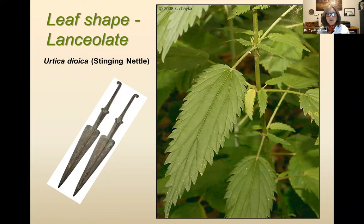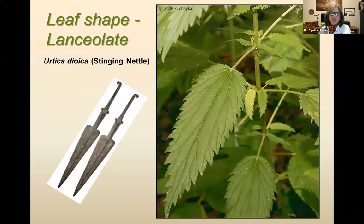I want to also show a couple of things about opposite leaf arrangement. These leaves are across from each other, and then you wonder what this little tiny leaf is — most plants have what's called a stipule, though sometimes they fall off and you can't see them. Stipules can be quite elaborate and can be a character, especially in the pea family. If the key refers to a stipule, it's talking about these little leaves at the base of the bigger leaf.